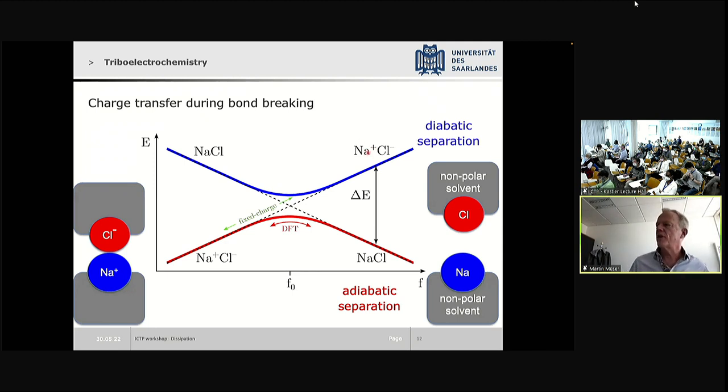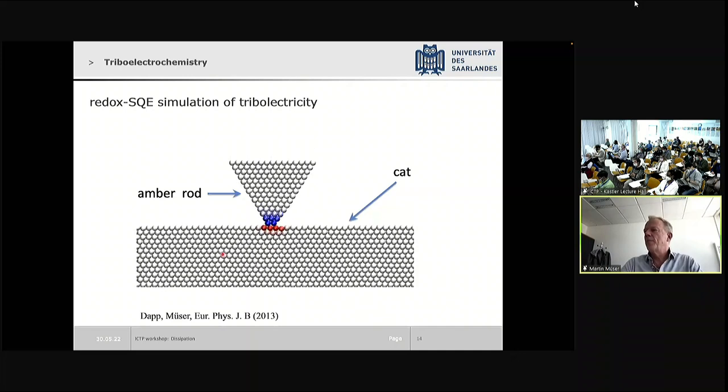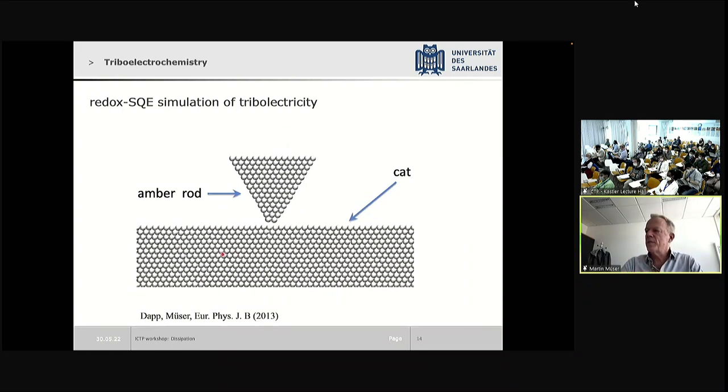So here you see in the movie what happens: Any physicist will recognize that this is an amber rod and this is a cat, right? So it cannot be mistaken. So we approach with the rod to the cat, it picks up negative charge, the cat picks up positive charge, but as we go back, the charge goes back. And DFT actually suffers a bit from the same problem, because like any other method that assigns charges or charge density on a unique minimization principle, your charge state depends exclusively on the atomic positions but it has no history dependence added to it.